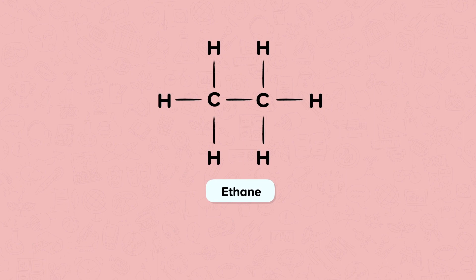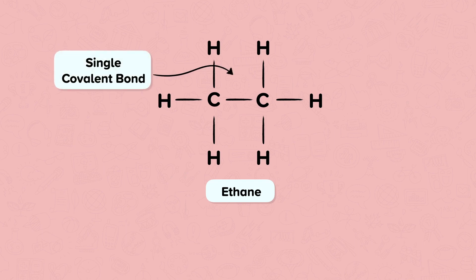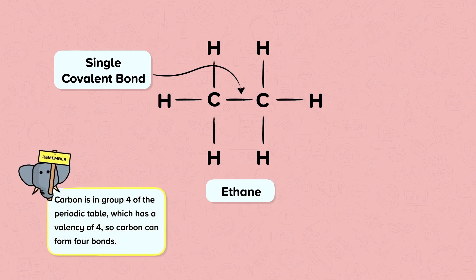Alkanes have only single covalent bonds between carbon atoms, so they contain the maximum possible number of hydrogen atoms per carbon atom. Carbon is in group 4 of the periodic table, which has a valency of 4, so carbon can form 4 bonds.